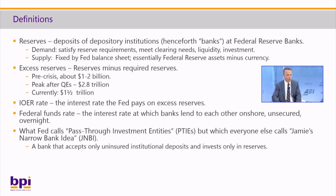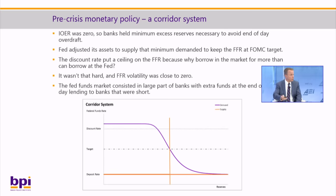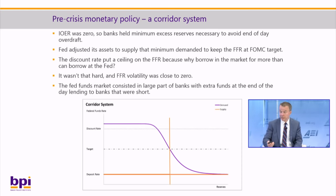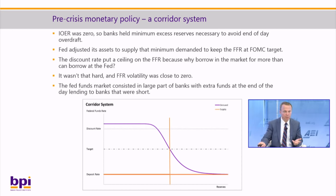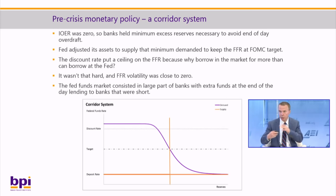Every day banks held the minimum amount they could to avoid overdrafts. The Fed adjusted its assets to supply that minimum demand to keep the federal funds rate at the FOMC target. In this graph, the supply is the orange vertical line, the demand is the purple line, and the target is the dotted line. Every morning there were calls between the Fed and the New York Fed to determine where that orange line needed to be to clear the market at the target. The discount rate puts the ceiling on the federal funds rate because why would you borrow in the market for more than you can borrow from the Fed? But it wasn't that hard — announce the new target and rates move to that target; federal funds rate volatility was close to zero.